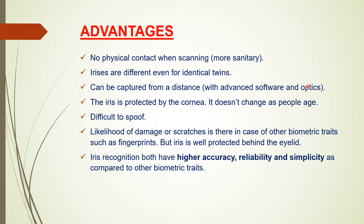Here are some advantages: there is no physical contact when scanning, making it more hygienic. Irises are different even for identical twins. The iris can be captured from a distance with advanced software and optics. The iris is protected by the cornea. It doesn't change as people age. It is difficult to spoof. Unlike other biometric traits such as fingerprints, the iris has a low likelihood of damage or scratches as it is well protected behind the eyelid. In summary, iris recognition offers higher accuracy, reliability, and simplicity compared to other biometric traits.